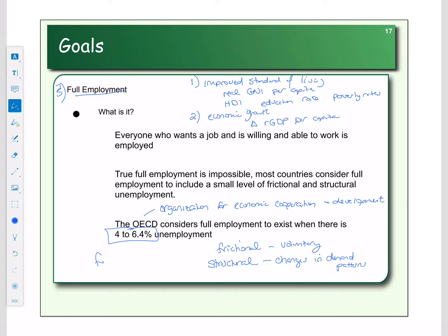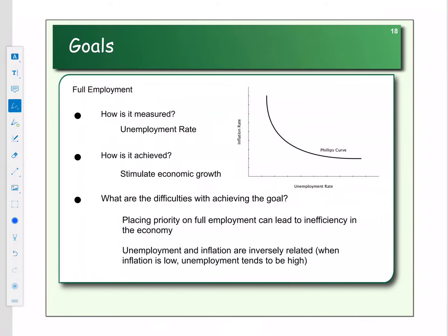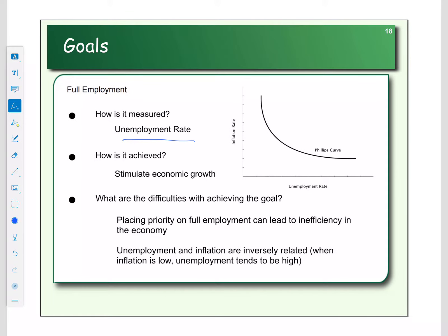We accept that some structural unemployment is okay because we change the goods and services we buy over time. That's why when we talk about full employment, we're still going to have an unemployment rate between 4% and 6.4% due to frictional and structural unemployment. We measure full employment with the unemployment rate — the percentage of people looking for work who can't find it. If the economy is growing, we need more workers, so unemployment goes down.